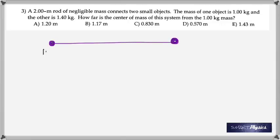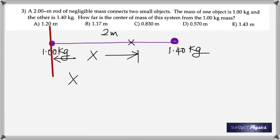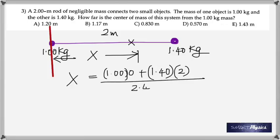Number three: two objects, one 1 kilogram, the other 1.4, and you've got to find the center of mass from the 1 kilogram mass. Obviously I'm using the formula m1 times r1 plus m2 times r2 divided by m1 plus m2.